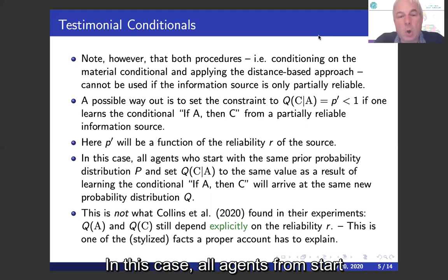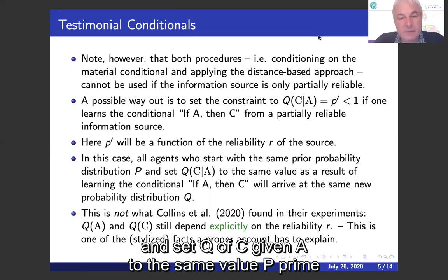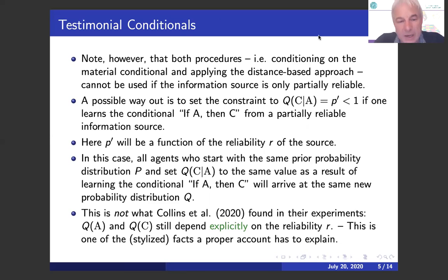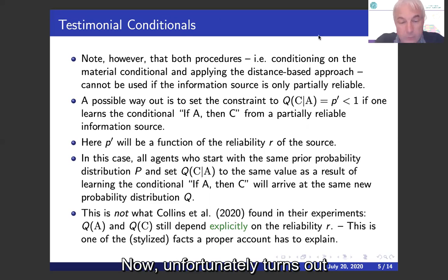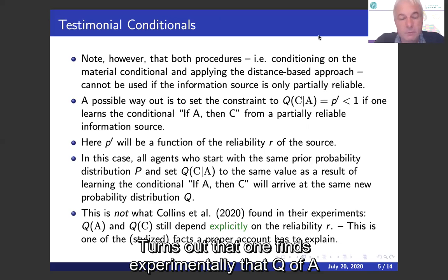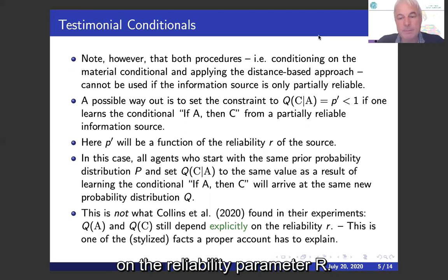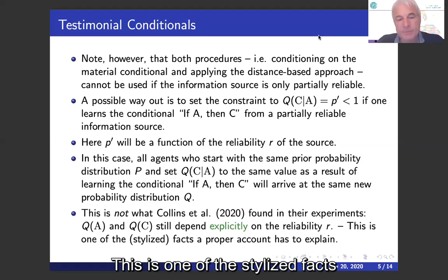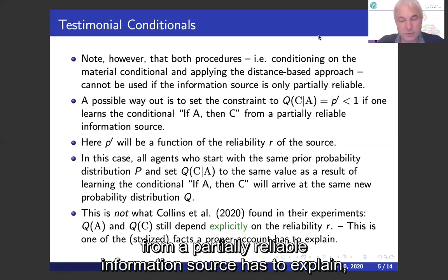In this case, all agents who start with the same prior probability distribution and set Q(C|A) to the same value P' will arrive at the same probability distribution Q. Unfortunately, it turns out that this is not what one finds experimentally. It turns out experimentally that Q(A) and Q(C) still depend explicitly on the reliability parameter R. This is one of the stylized facts that a proper account of learning indicative conditionals from a partially reliable information source has to explain.